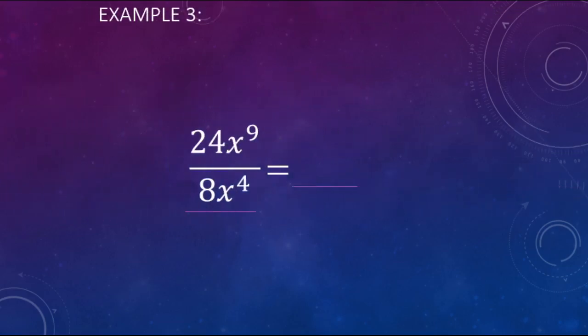Last example. 24x to the 9th power divided by, or over, 8x to the 4th power. Now to start out with, we are going to break this up into two smaller questions. Let's look at the numbers first. We got a 24 and an 8. And what operation are we doing? We are doing division. So we're going to do 24 divided by 8, and that's going to make 3.